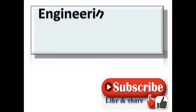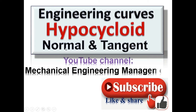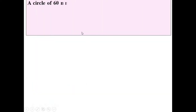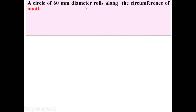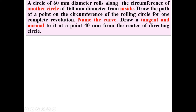Today we are going to discuss engineering curves, specifically the hypocycloid with normal and tangent. Welcome to my YouTube channel Mechanical Engineering Management — like, share and subscribe. Let's take one example: a circle of 60 mm diameter rolls along the circumference of another circle of 160 mm diameter from inside.